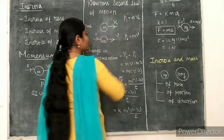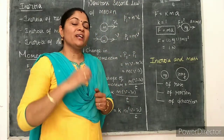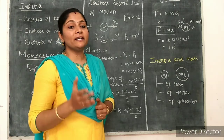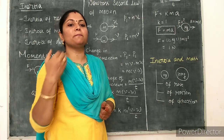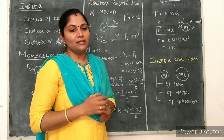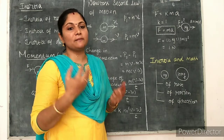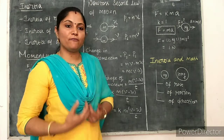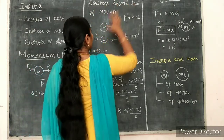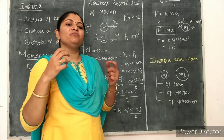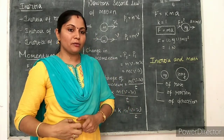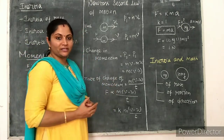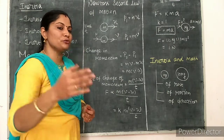Newton's second law of motion: the rate of change of momentum of the object is directly proportional to the external force applied on that object. We will see what is meant by change in momentum, what is the rate of change of momentum, and how it is directly proportional to force — in order to derive the expression F equals M into A.